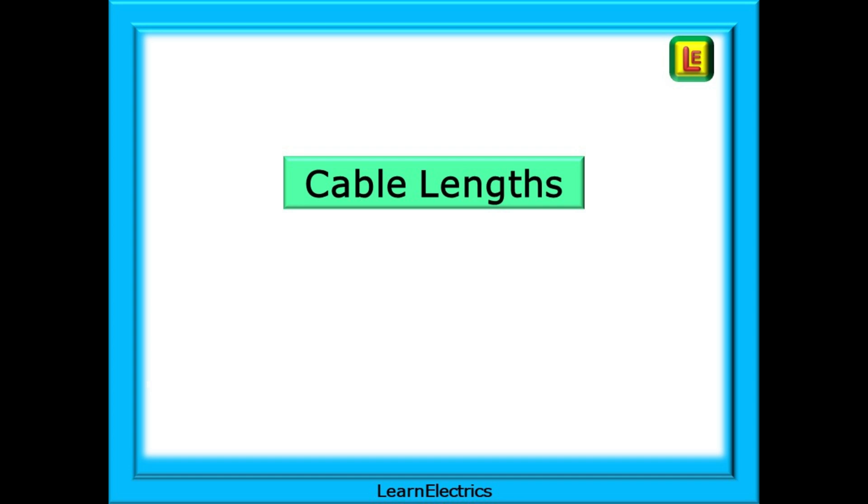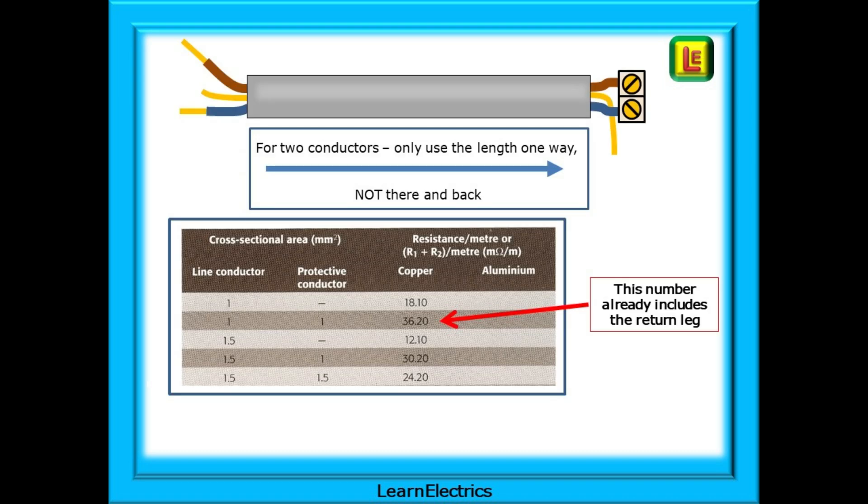A little more information for you on cable lengths. Lots of questions asked. If I have a 10 meter length of twin and earth and want to calculate the R1 plus R2, do I use 20 meters as the length, 10 meters for the line and 10 meters for the earth? The answer is no. For two conductors, we only use the length one way, not there and back. The milliohms values shown in the table takes into account the length of each conductor.